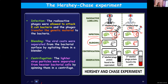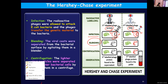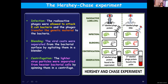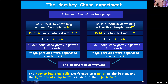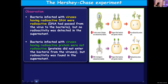Three steps were involved: first, allowing the phages to attack the bacterial cell — upon attacking, they get attached to the bacterial cell wall and transfer only the genetic material, with remaining portions not entering the bacterial cells. Then, using a blender, the viral coats were separated from the bacterial cells. After blending, they were centrifuged. Bacterial cells were heavier and viral particles were lighter, so lighter virus particles were found in the supernatant at the top, while heavier bacterial cells settled at the bottom.